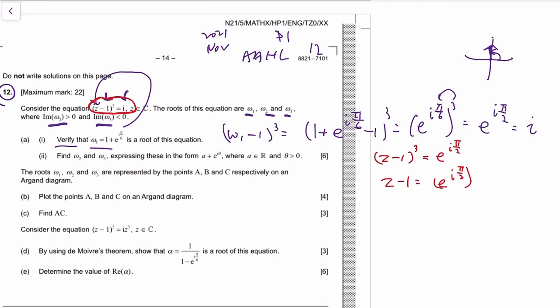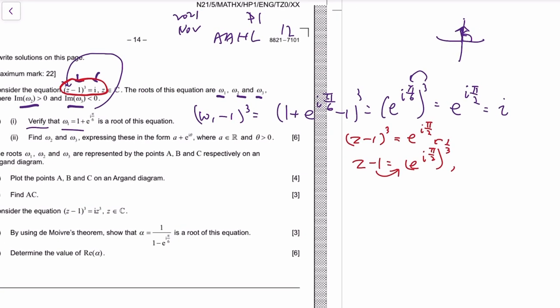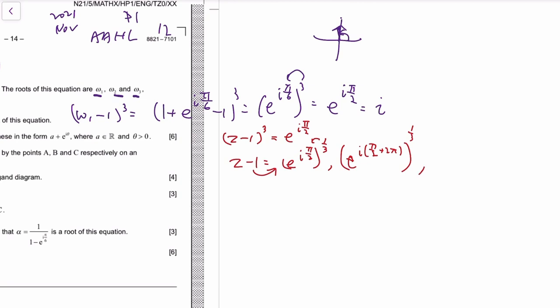So again, i is e to the i pi over 2, so z minus 1 would be e to the i pi over 2, take cube root. If you keep with this, that will become pi over 6, and then you add the one that gives omega 1. But we know there should be three answers, and the next answer is obtained by—you go to the argument, you add 2 pi before you raise to the power of one third.